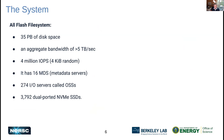One exciting aspect of Perlmutter is the all-flash scratch file system. It's about 35 petabytes of disk space with an aggregate bandwidth of over five terabytes per second. Because it's flash, it performs well in terms of IOPS — 4 million IOPS per second. Underneath are about 4,000 NVMe SSDs powering the performance. Unlike Cori, where you had a disk-based scratch and a separate flash-based burst buffer layer, on Perlmutter the story is simplified: you just have one scratch file system and it's all flash.